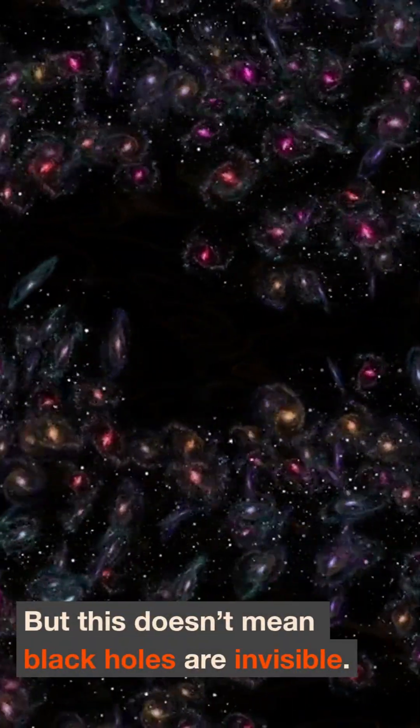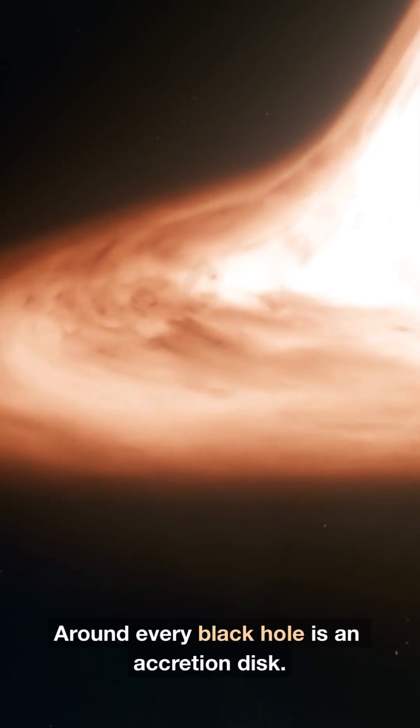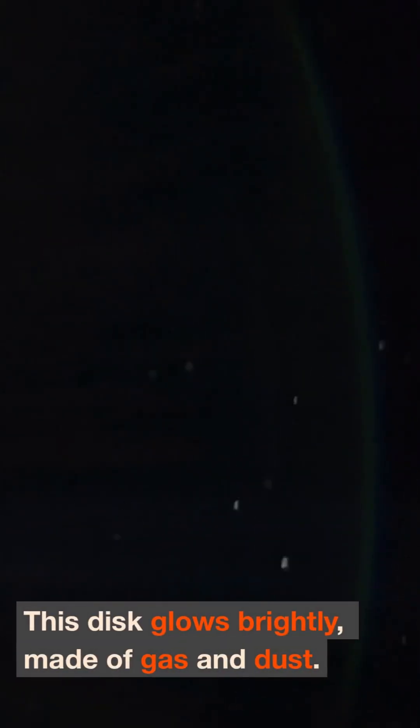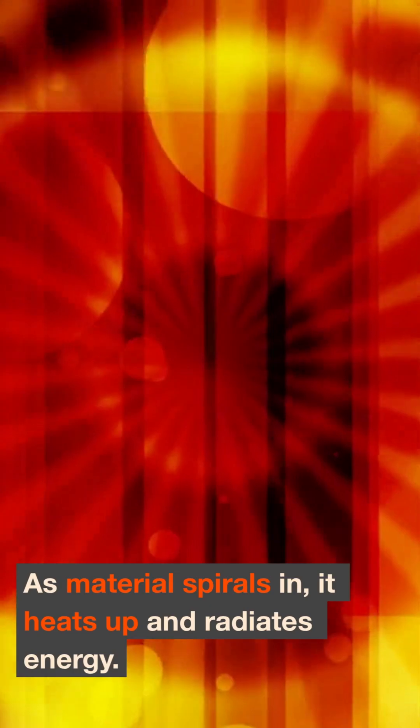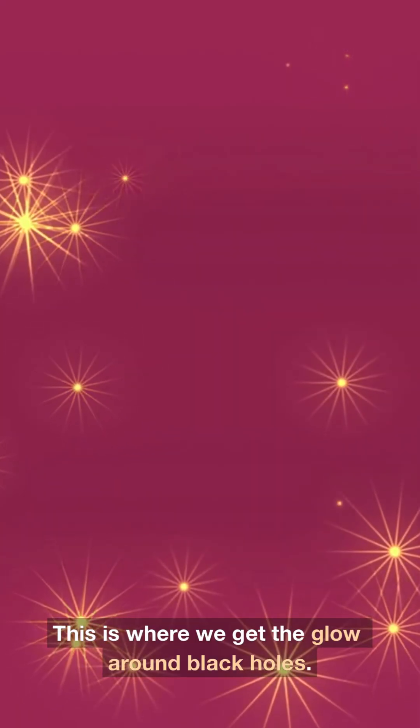But this doesn't mean black holes are invisible. Around every black hole is an accretion disk. This disk glows brightly, made of gas and dust. As material spirals in, it heats up and radiates energy. This is where we get the glow around black holes.